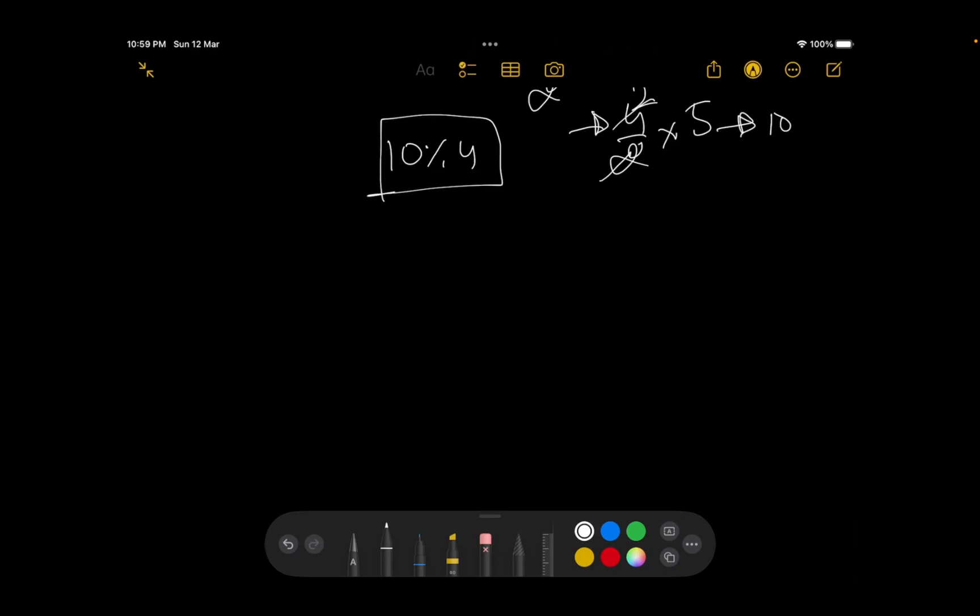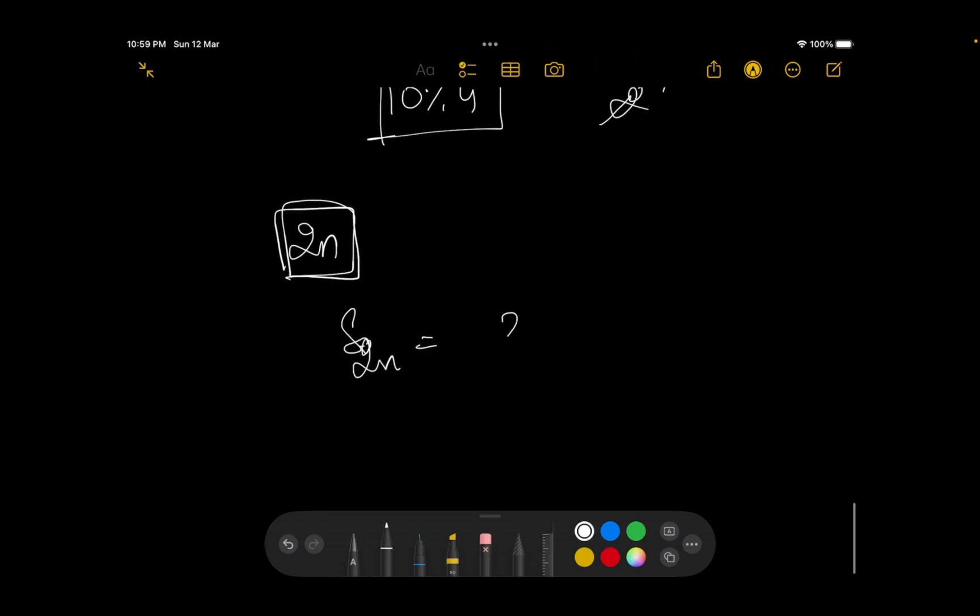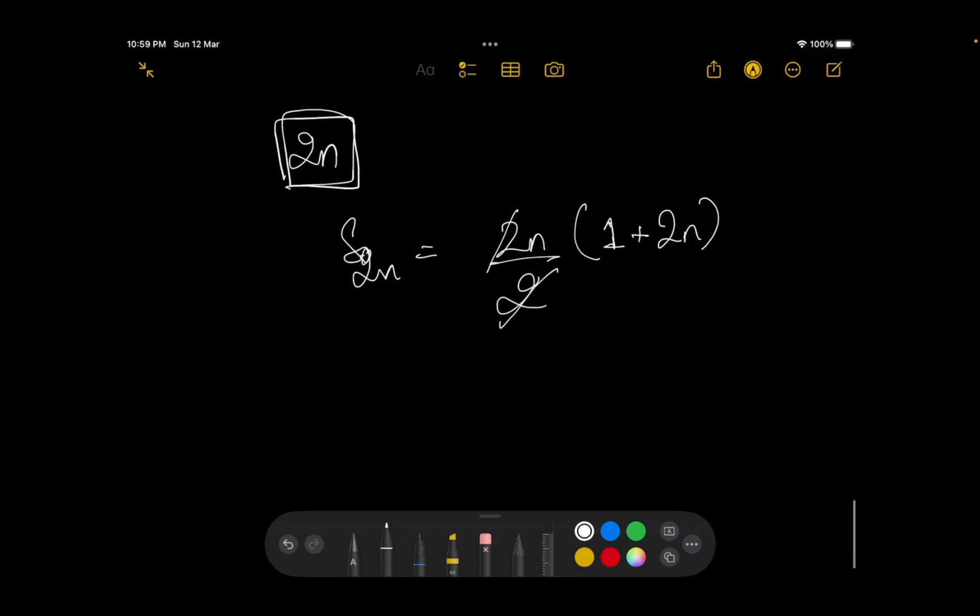However, if I take the value 2n. What would happen with 2n? So S of 2n would be 2n divided by 2 into a plus l, so a is 1 and l is 2n over here. Now 2 gets cancelled out. This becomes n into 1 plus 2n. Is this always divisible by n? Yes, it is always divisible by n. It is a simple integer which is getting multiplied by n, so it is always divisible by n.